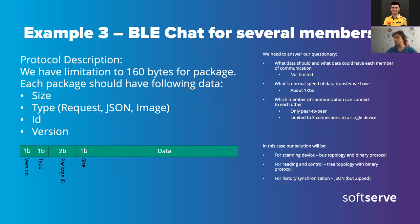We're limited to about 200 bytes per package. Each packet header should contain: size of the package, type of the package (image, JSON, or request), a package identifier, and a protocol version — because if you change the binary protocol, you need to verify both sides support it or can negotiate compatibility.